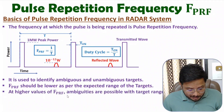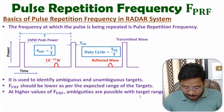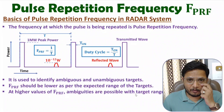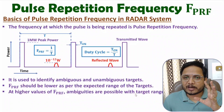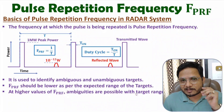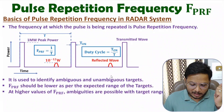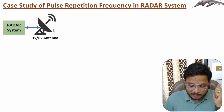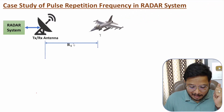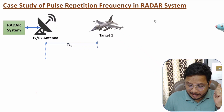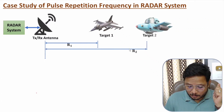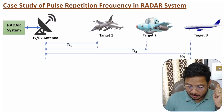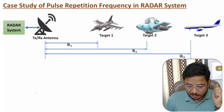Now let us have a very interesting case study by which you can understand how exactly the operator selects pulse repetition frequency. Here I'll consider a radar system. Let us assume we have a first target at range R1, a second target at range R2, and a third target at range R3. R1 is the smallest range and R3 is the largest.